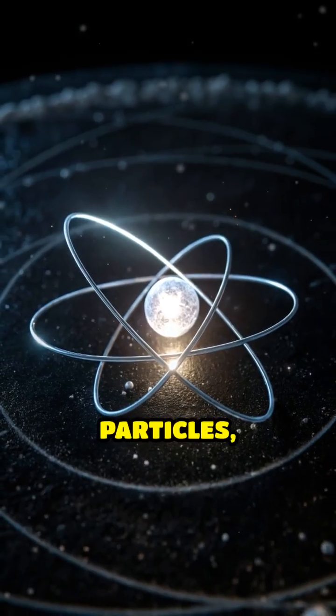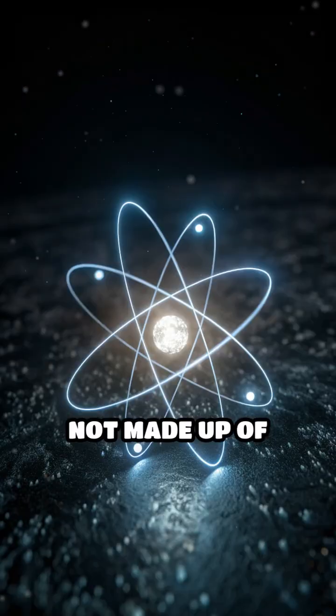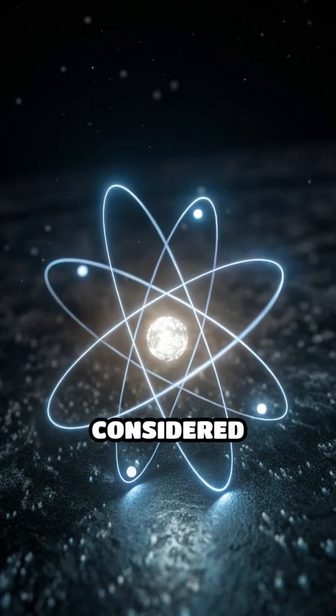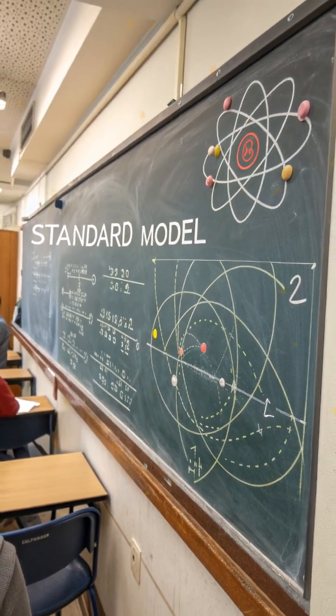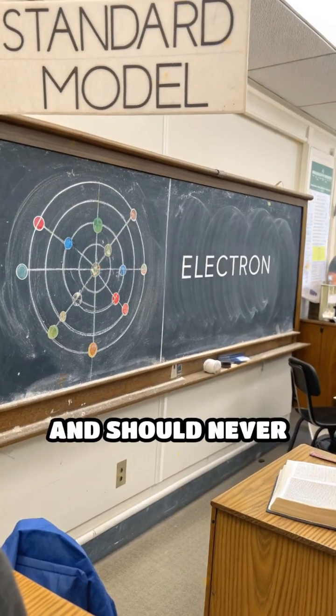Electrons are fundamental particles, meaning they are not made up of anything smaller and are considered elementary. According to the standard model of particle physics, electrons are completely stable and should never decay.